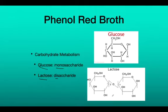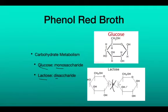Lactose fermenters are going to produce a specific enzyme called beta-galactosidase. Beta-galactosidase is going to break the bond between the two sugar molecules — glucose and galactose. When that bond is broken, glucose will be released from galactose and will be available for fermentation. This is why an organism that can ferment lactose is also capable of glucose fermentation.